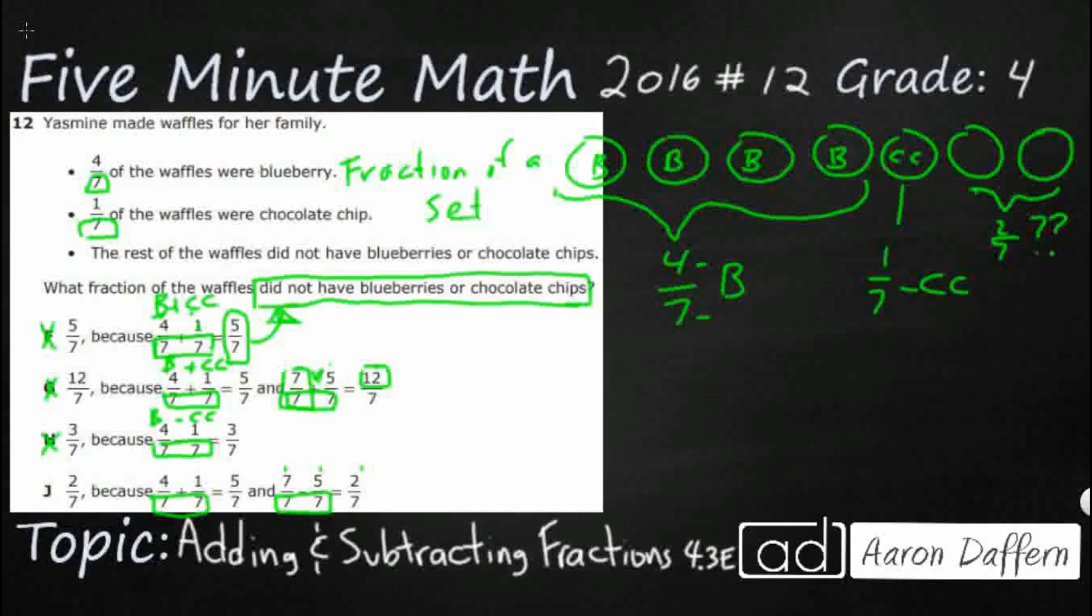And then J, what we do here is we add our blueberry and chocolate chip. There we go. There's our five sevenths. And then, what we ended up doing is we subtracted it from how many total there are. There's seven sevenths total. Take away your blueberries and chocolate chips, and guess what you get? Our two sevenths. The answer is J.